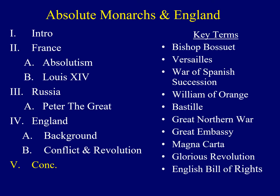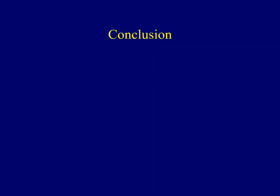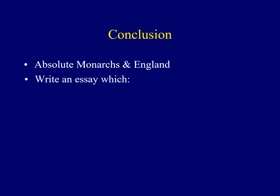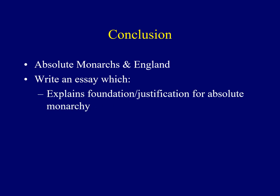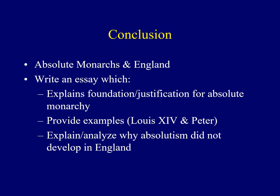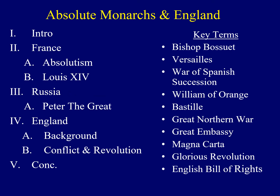We're just about done. To summarize: this lecture has dealt with the rise of absolute monarchs in France and Russia as well as the lack of absolute monarchs in England. You should be able to write an essay explaining the foundation and justification for absolute monarchy, provide examples from the actions of Louis XIV and Peter the Great, and analyze factors which demonstrate the prevention of absolute power from developing in England. I hope you found this an interesting topic and learned something new. Take care, have a good day, and we'll see you again soon.